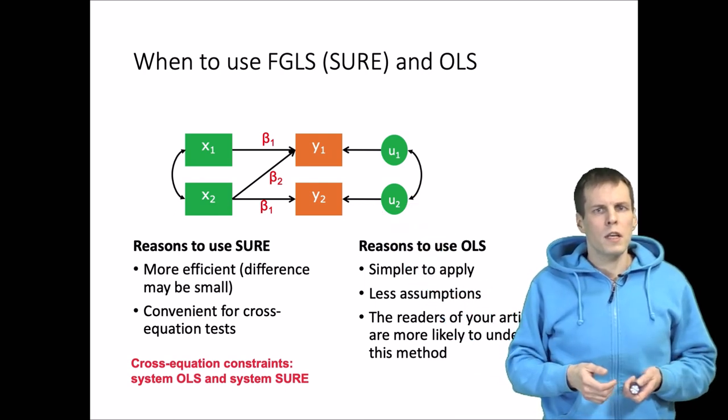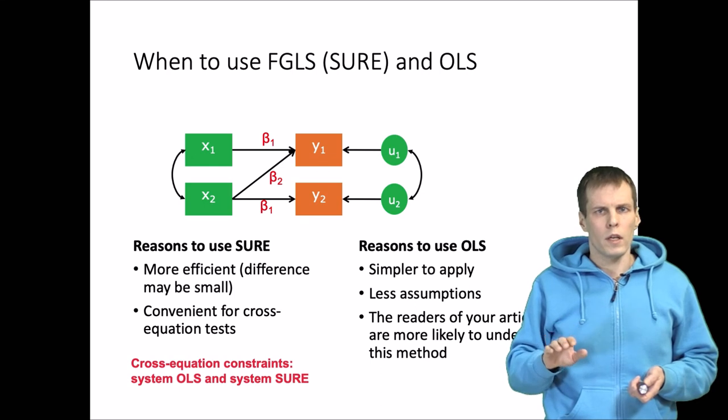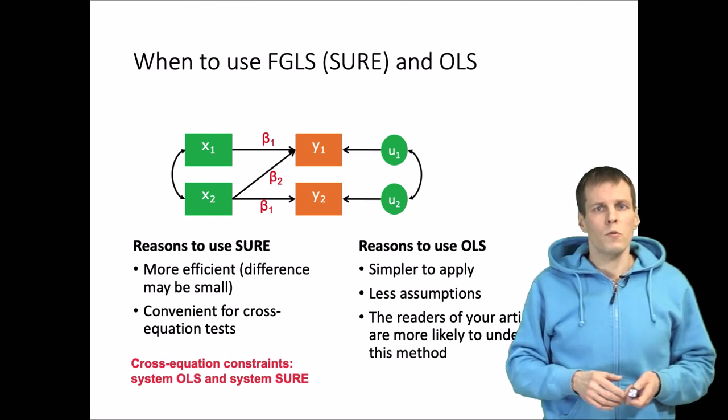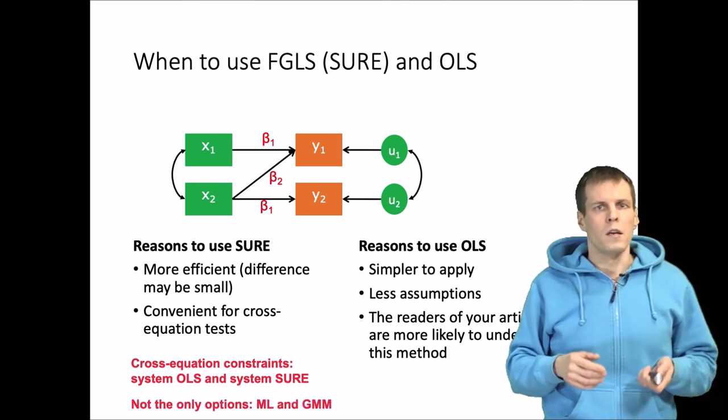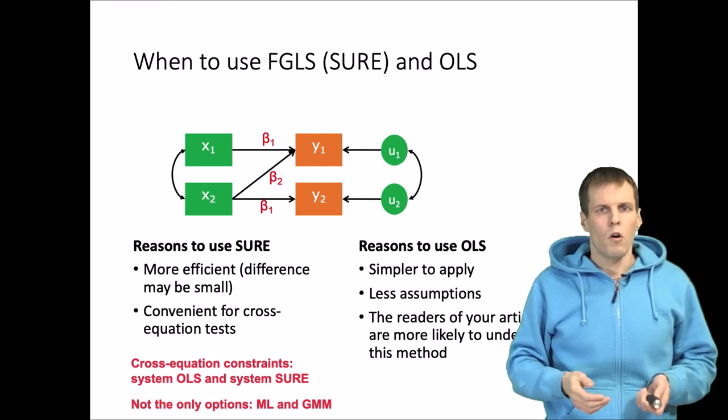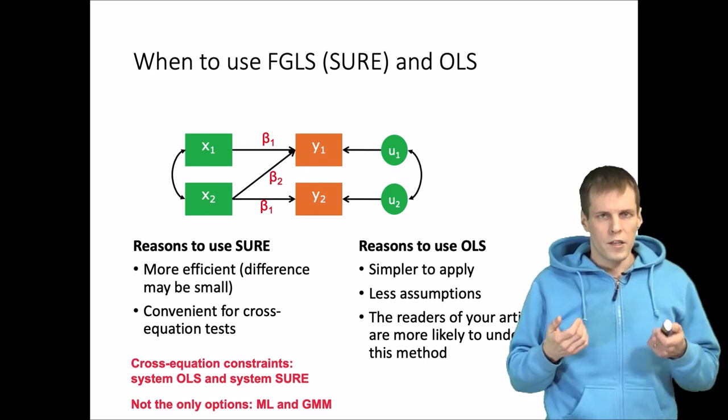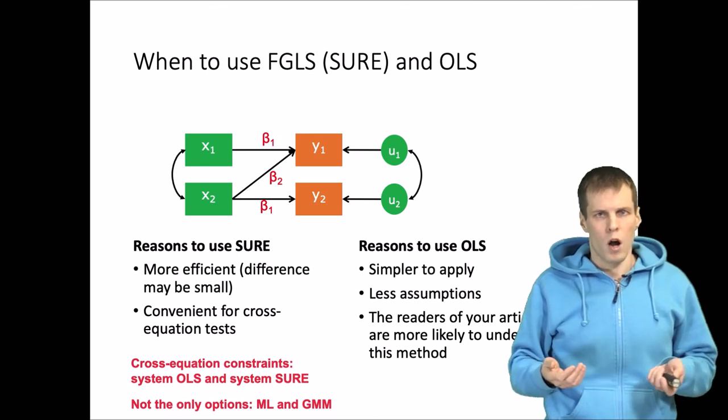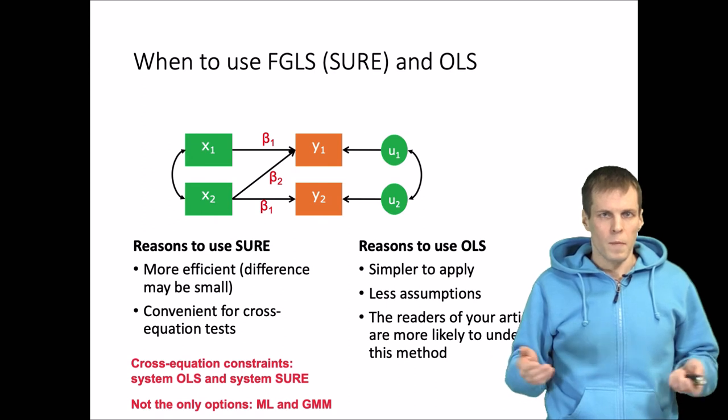Another thing to understand is that these are not the only techniques that you can apply for estimating this kind of models. If you have this kind of simultaneous equations model, you can also apply maximum likelihood estimation or you can apply generalized method of moment estimation, which is perhaps a more modern alternative of seemingly unrelated regression estimation, and in my opinion it obsoletes this technique.